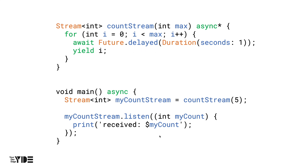From the side of the stream user, you must first create the stream you want to use. We created a countStream called myCountStream by giving 5 as an argument to countStream. However, as mentioned before, from the perspective of using the stream, it is not possible to know when data will come, so you have to listen to whether data is coming or not. Stream provides a function called listen for this. The listen function receives a void type callback as an argument. This callback is executed whenever new data is read from the stream.